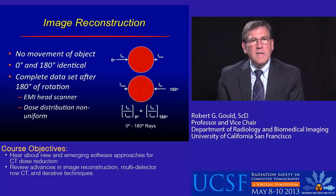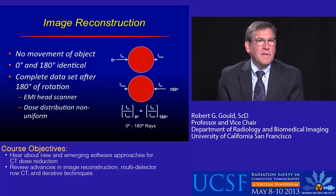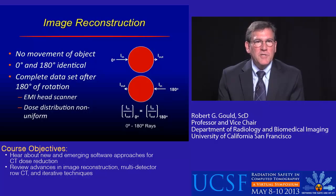Since the object has not moved, the 0-to-180 and 180-to-0 rays are exactly the same. So to do a reconstruction, we really only have to go 180 degrees around the patient. The EMI head scanner did this — it was the very first scanner.